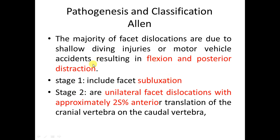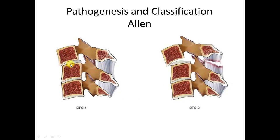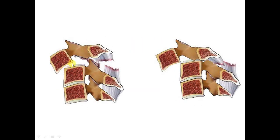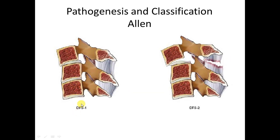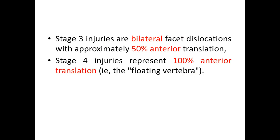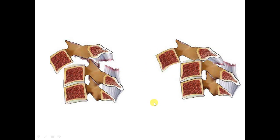The Allen-Ferguson classification of flexion-distraction injuries has four stages. Stage one is subluxation without translation. About 25% translation indicates unilateral facet dislocation. Translation of more than 50% of the vertebral width indicates bilateral facet dislocation. Translation greater than 100% is the floating vertebra, which is stage four.